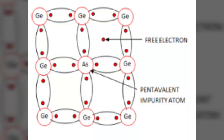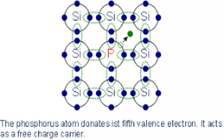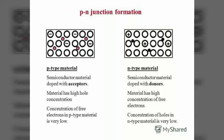Arsenic is pentavalent and therefore its atom has 5 valence electrons. The arsenic atom fits into the germanium crystal such that its 4 valence electrons form covalent bonds with 4 germanium atoms. The fifth valence electron of the arsenic atom finds no place in covalent bonds and is thus free. The addition of pentavalent impurity produces conduction band electrons. The fifth left-over valence electron cannot be accommodated in the valence bond and travels to the conduction band. Thermal energy at room temperature still generates a few hole-electron pairs, however the number of free electrons provided by the pentavalent impurity far exceeds the number of holes, so it is called N-type.